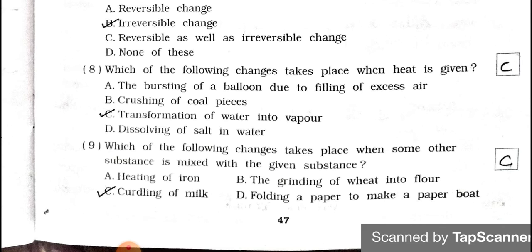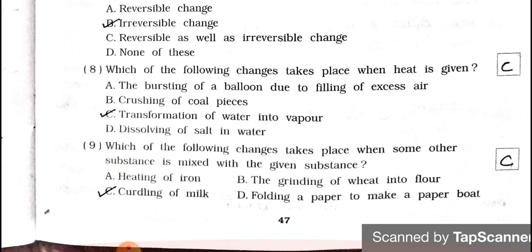Number 9. Which of the following changes take place when some other substance is mixed with the given substance? A heating of iron, B the grinding of wheat into flour, C curdling of milk, D folding a paper to make a paper boat. Answer is option C, curdling of milk. Now we will see the next page.